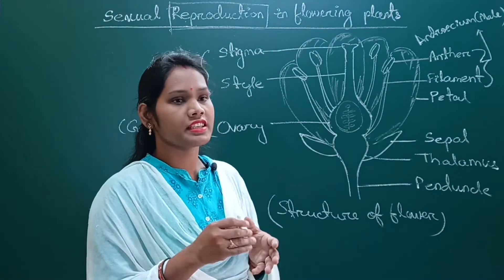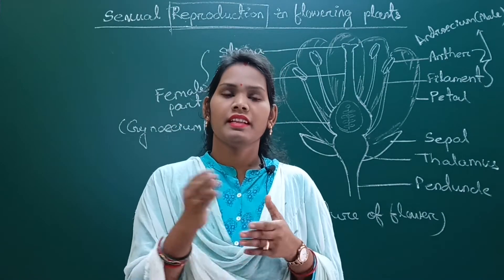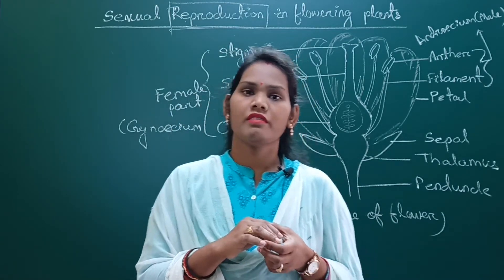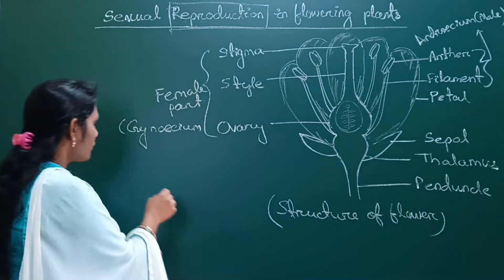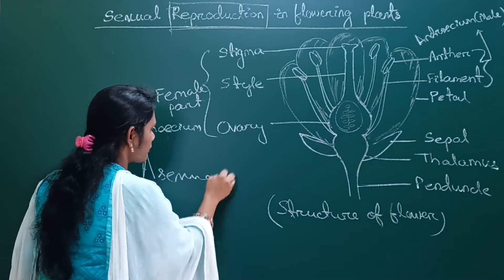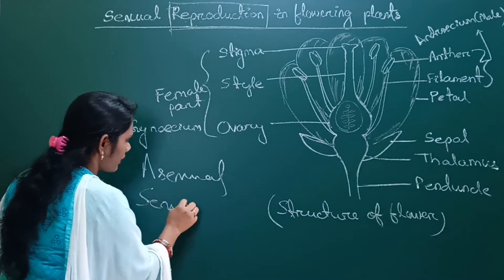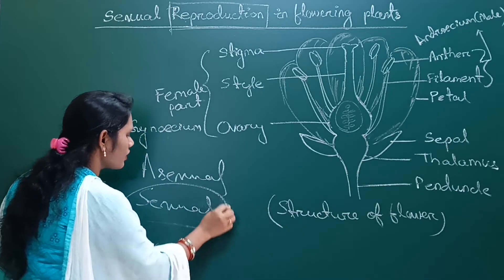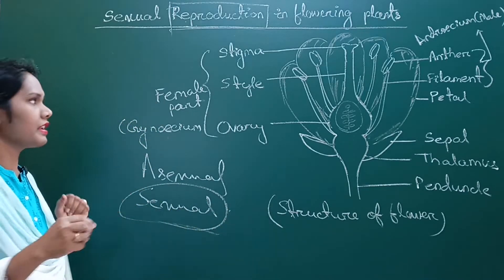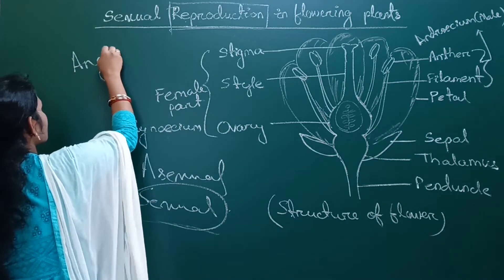The mode of reproduction which does not involve any type of sex is called asexual mode of reproduction. In plants, both asexual and sexual modes of reproduction occur, but only sexual mode of reproduction happens in angiospermic plants.